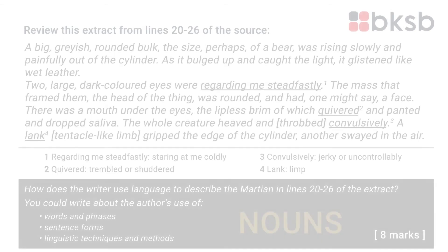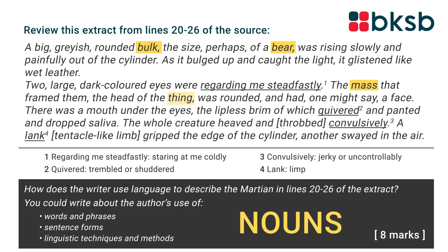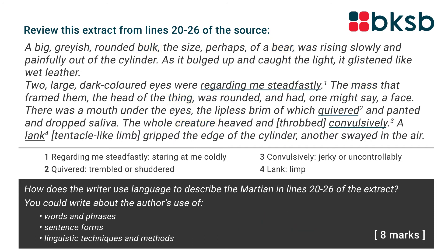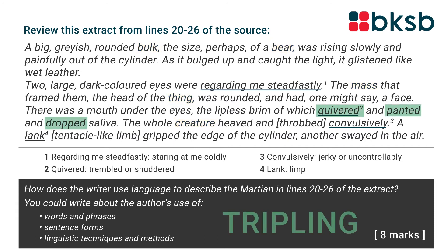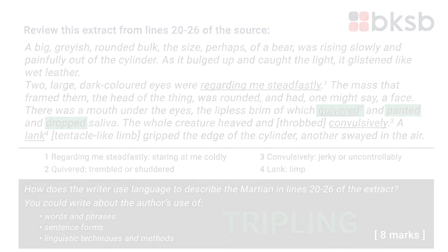For example, the nouns bulk, bear, mass, thing, and creature suggest that the Martian is an obscenely large, threatening and inhuman beast. Elsewhere, the three verbs quivered, panted, and dropped together form a triplet that creates a mounting sense of disgust.